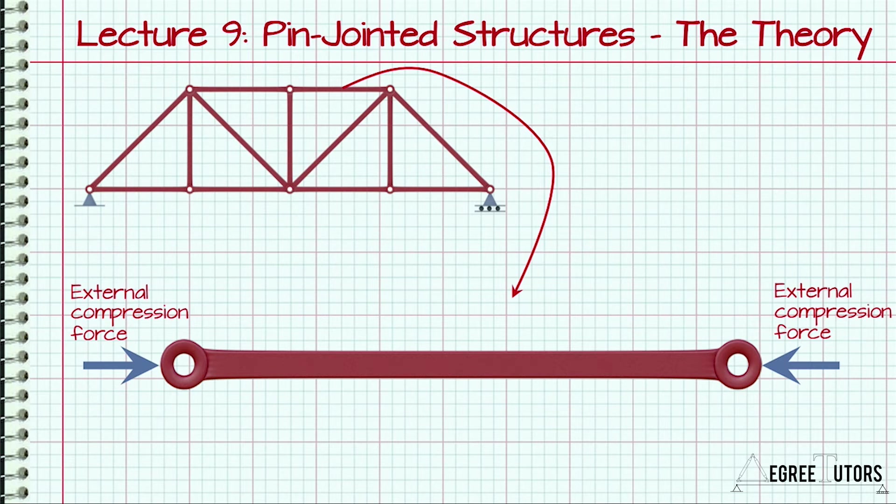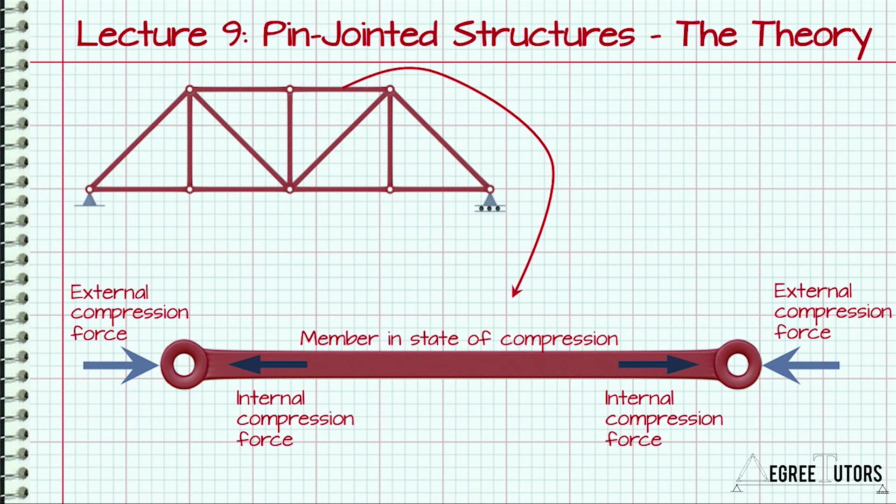To resist or balance this force, an internal force must be generated within the member itself. Otherwise, the member would simply crumble under the influence of the external load. We can represent this internal force with arrows pointing outwards, opposing the external force applied at each end.